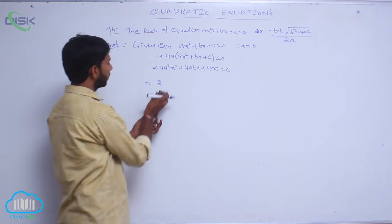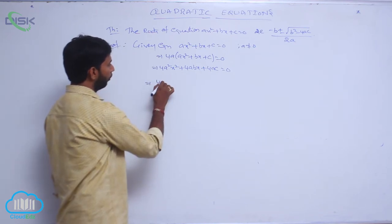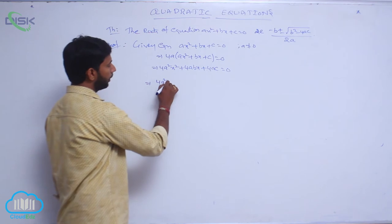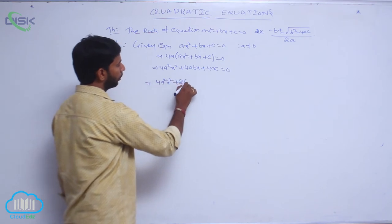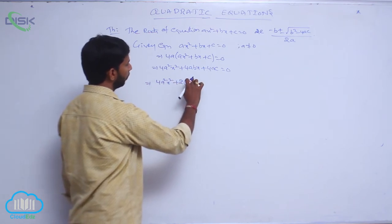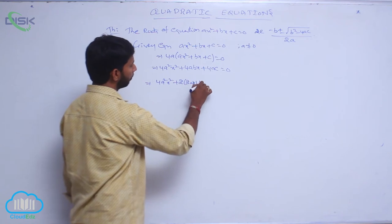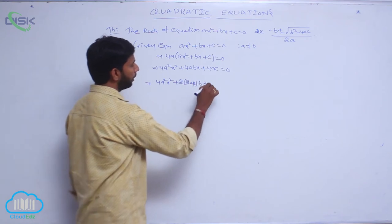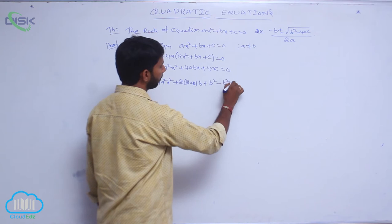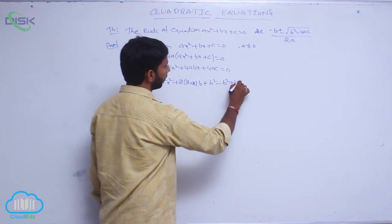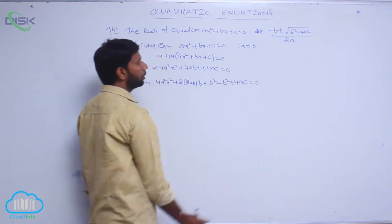This can be written as 4A²x² + 2·(2Ax)·B, then adding and separating B²: plus B² minus B² plus 4AC equals 0.